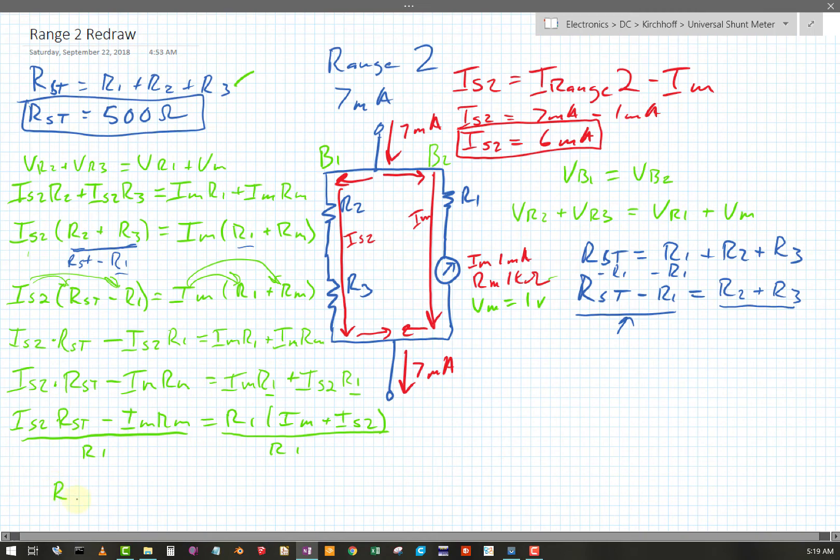Okay, which leads me with R1 is going to equal... So let's call Is2 times Rst minus Im Rm over, okay, and that's all over R1, right? Did I do it right? Actually, no, I didn't. I'm trying to solve for R1. Okay, so this actually should have been divide both sides by Im plus Is2. Okay. All right, quick recovery. So now it is, this will be R1, Im plus Is2.